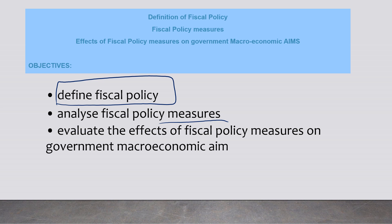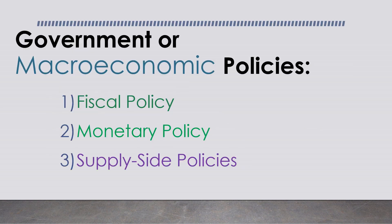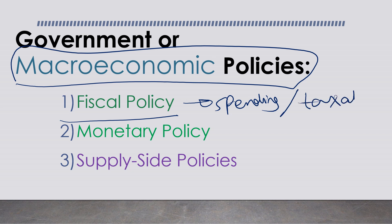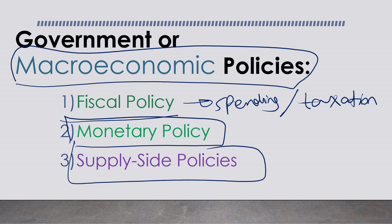Governments want to achieve economic growth and fight inflation. The macroeconomic policies they could use include fiscal policy, which deals with public spending and/or taxation; monetary policy, which we will explain in the next video; and supply-side policies. Our lesson for today will only be about the first one.